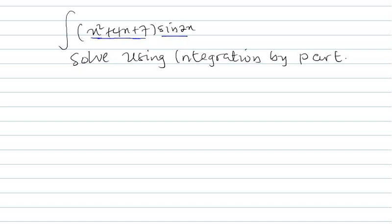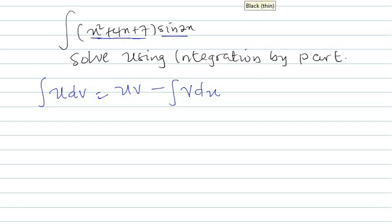Without wasting time, as we already explained the procedure in our previous video, we are going to apply the formula and evaluate the answer. The formula is: the integral of u dv is equal to uv minus the integral of v du. This is the given formula.